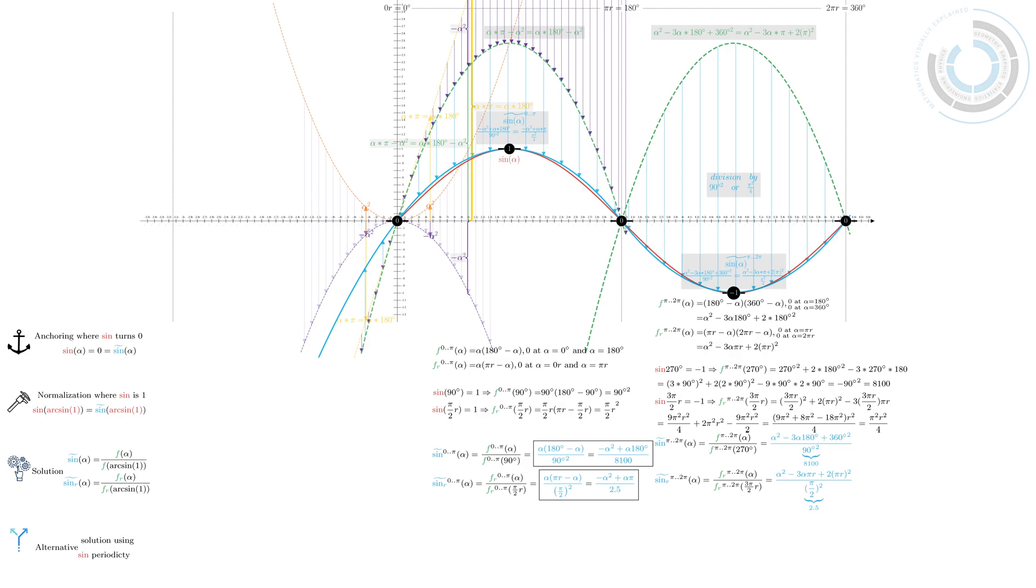You can arrive at the same solution by simply using the periodicity of sine. We know that sine of beta plus 180 degrees equals minus sine beta. Thus, alpha equals beta plus 180 degrees. Now, solve for beta by substituting beta with alpha minus 180 degrees to our very first approximation, between 0 and 180 degrees. After simplifying the equation, you can see we arrive at the same formula as before.